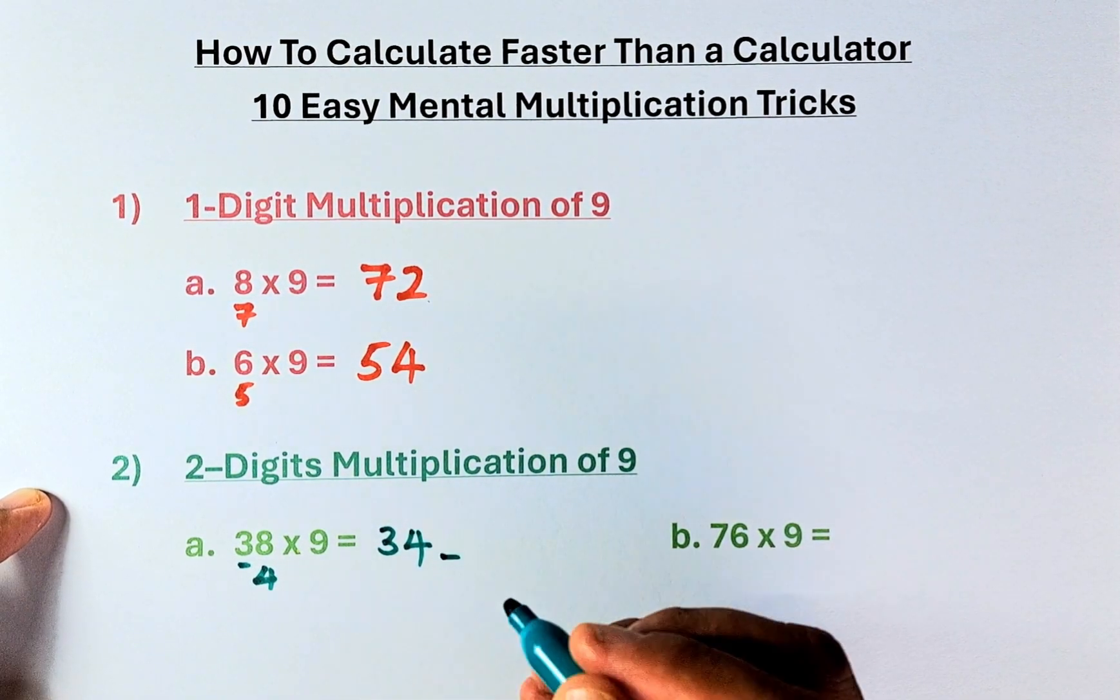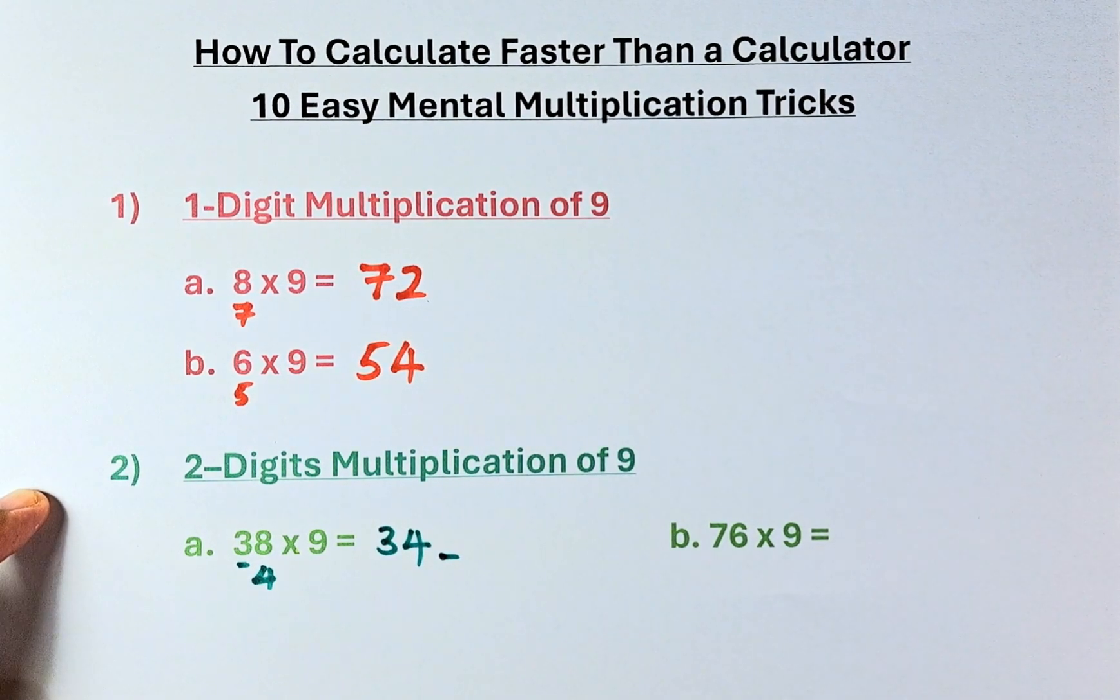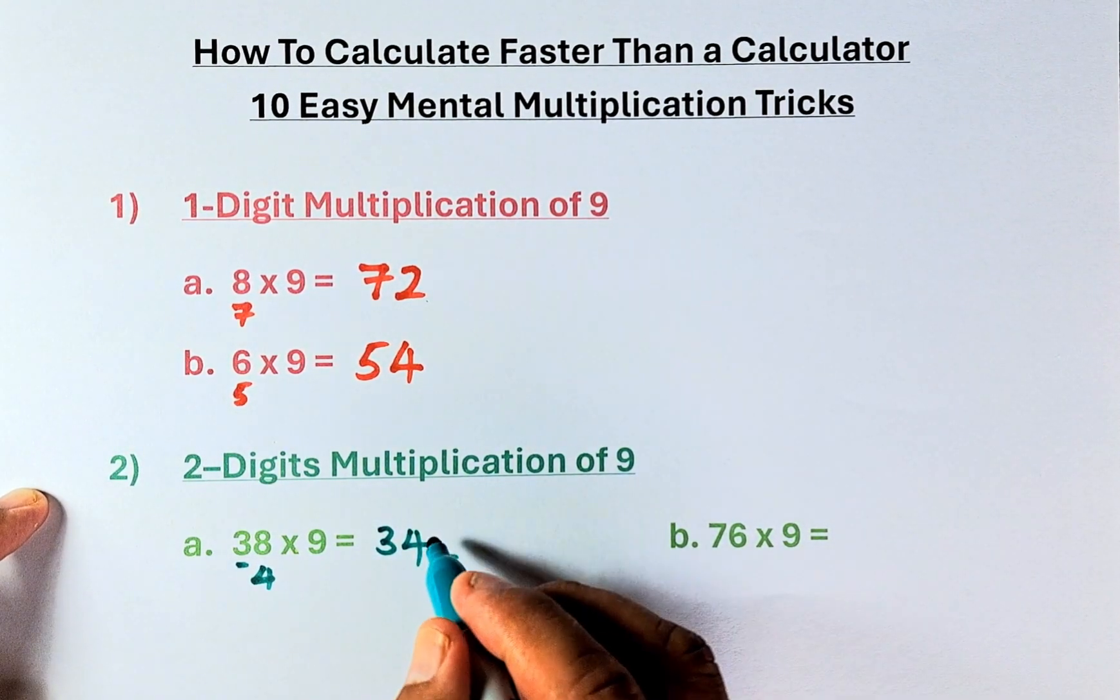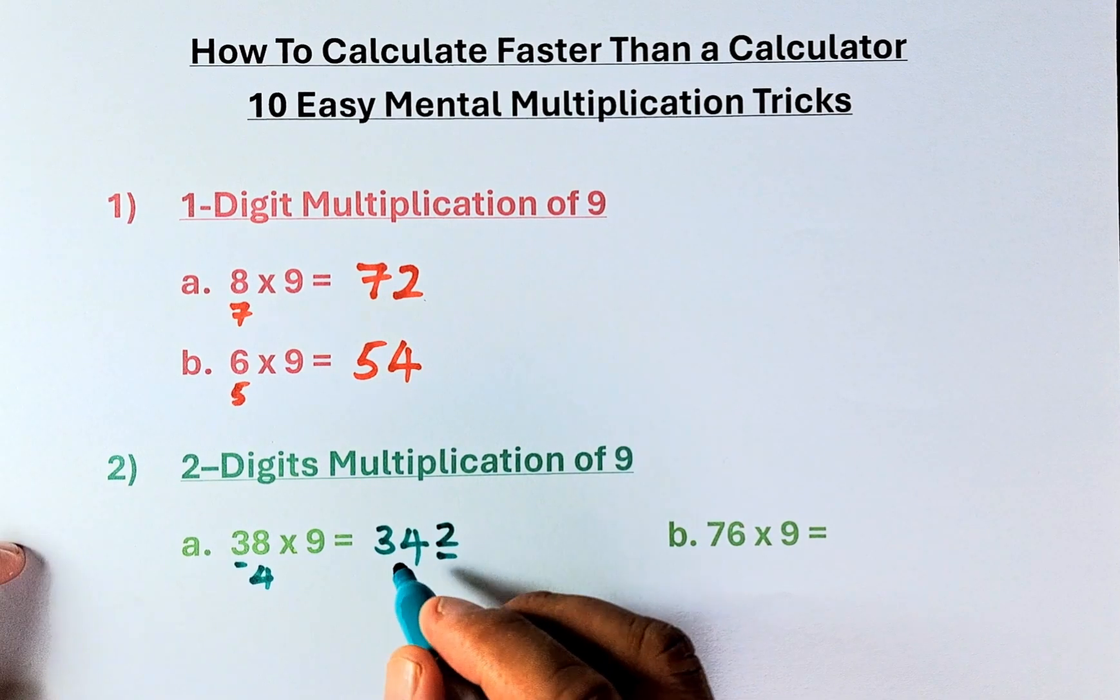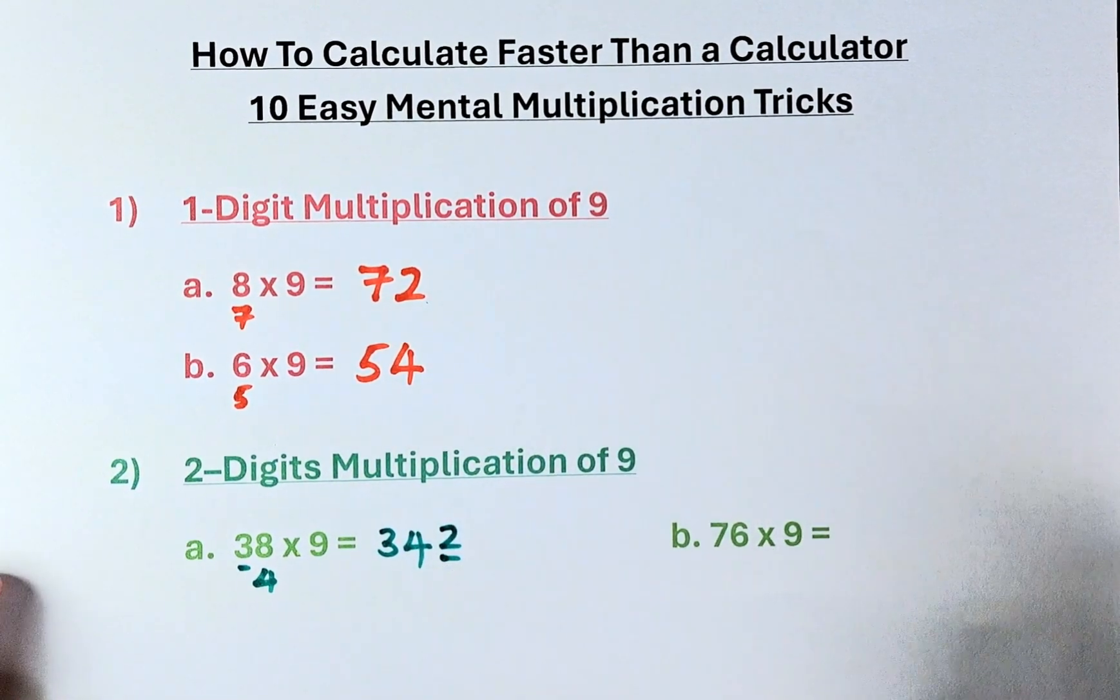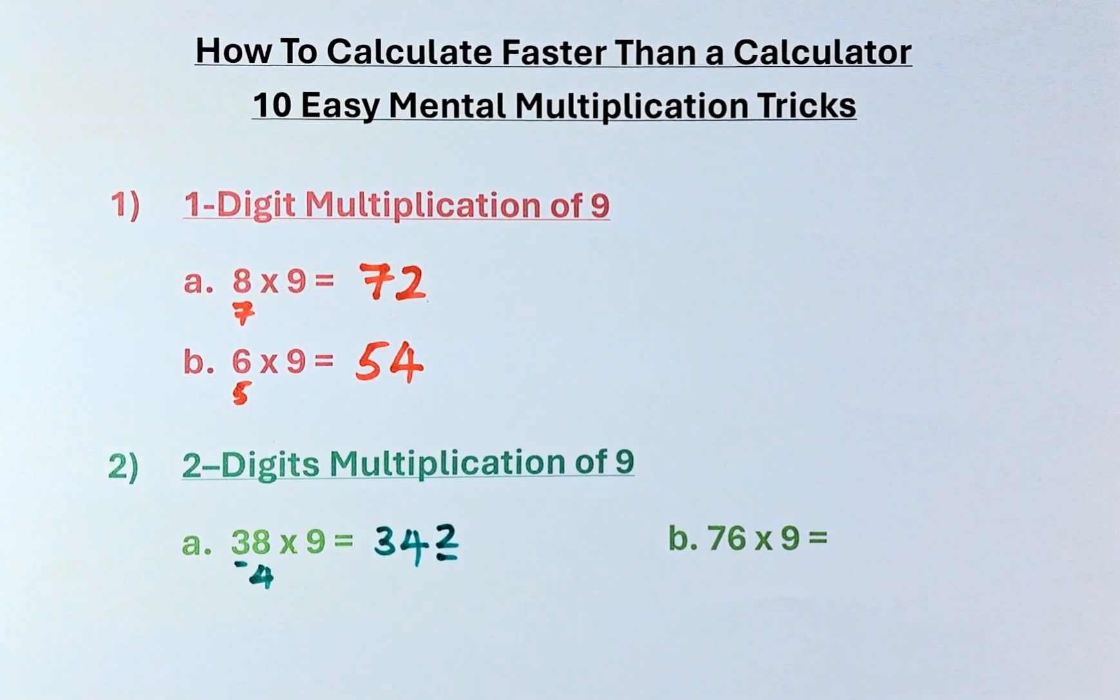And the third digit is going to be a multiple of 9. So you have 3, 4, so it has to be 2, because 3 plus 4 plus 2 is 9. So 9 is the multiple of 9, so that's the answer, 342.